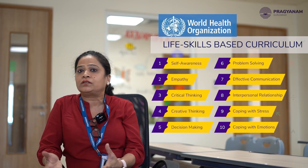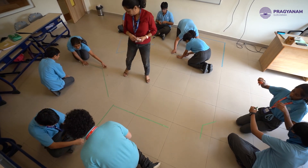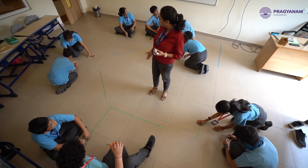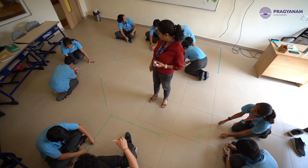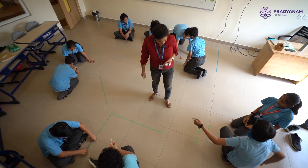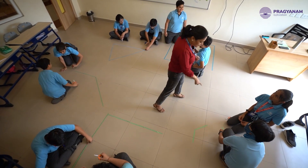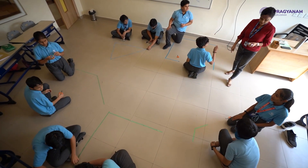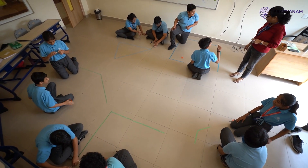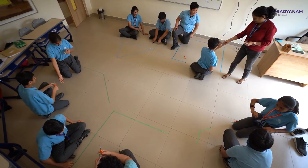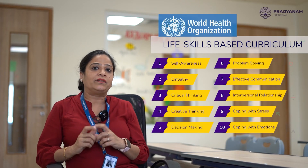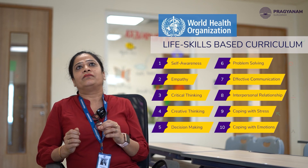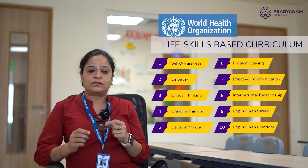Creative thinking was nurtured when I asked them to create a polygon on the floor. They themselves decided which polygon to create — one team chose a triangle, the polygon that takes the least effort. Then they decided on the shape and created it on the floor. That also involved problem-solving and critical thinking.